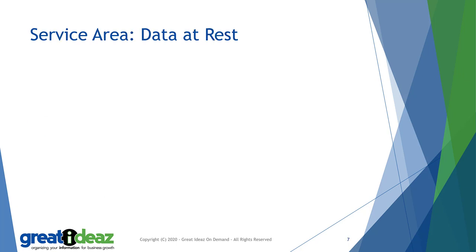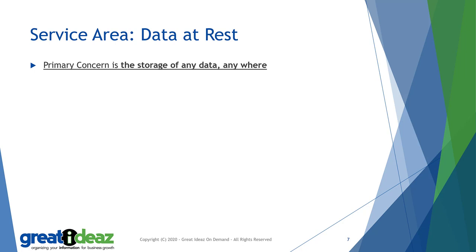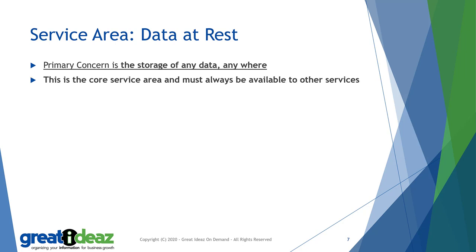Now let's consider the architectural constraints of the components in each of the service areas. We'll start with data at rest. The primary concern of a component in the data at rest service area is the storage of data. This data could be records in a database, files in a file system, emails in an email system. Essentially we're talking about the storage of any data anywhere in the enterprise and, as far as possible, making it completely data-agnostic — it shouldn't matter whether I'm saving data about a person, a car, a house, a financial account, or an insurance policy. This is the only core service area and it must always be available to the other peripheral service areas. It's not possible to present data you can't access.